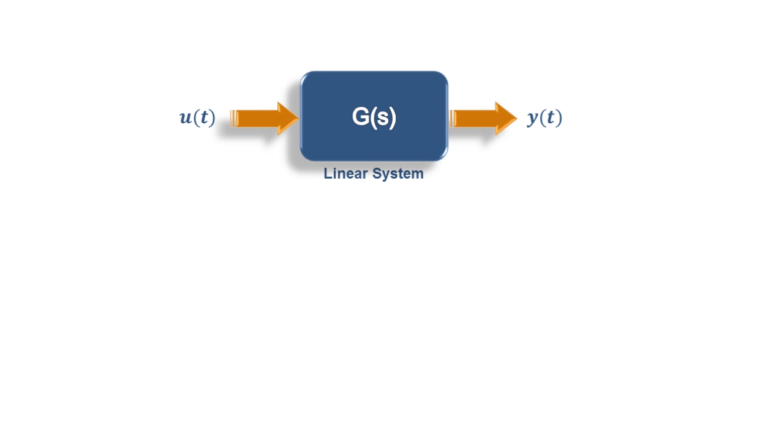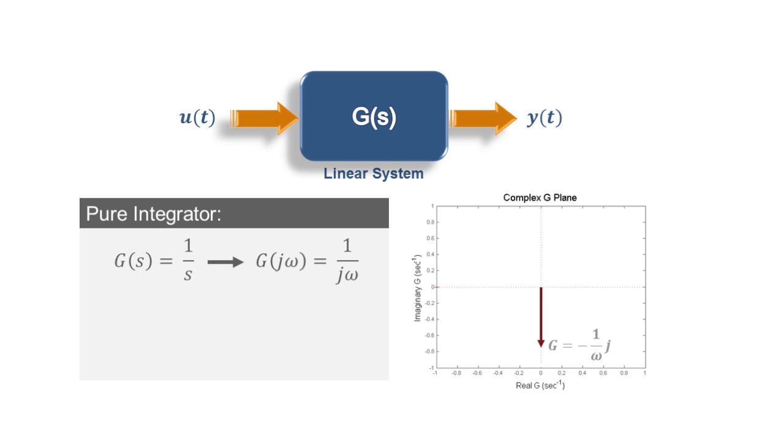The simplest construct I can start with is a pure integrator which corresponds to 1 over s in the Laplace domain. If we replace s by jω, our function G becomes a vector on the negative imaginary axis. Negative because we are multiplying the numerator and the denominator by the square root of minus 1. This vector has a constant phase angle of minus 90 degrees and a magnitude of 1 over ω. Notice that as the frequency ω goes from 0 to infinity, the magnitude of our vector will go from infinity to 0.